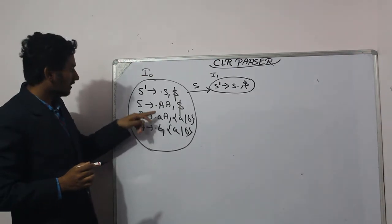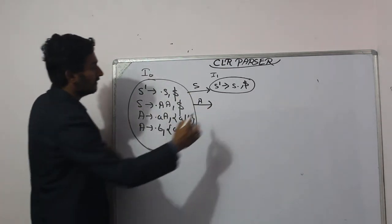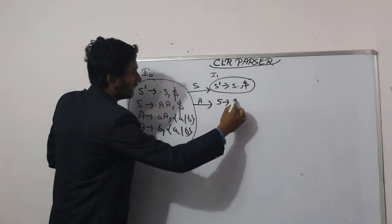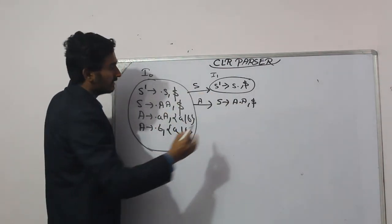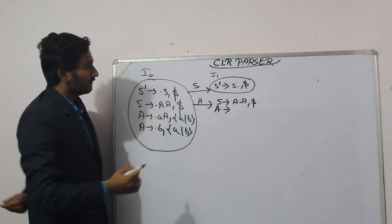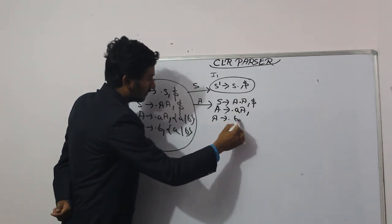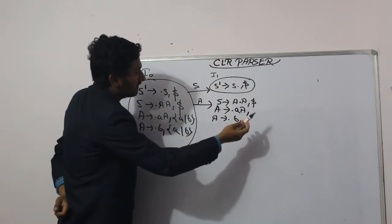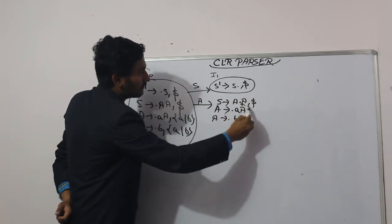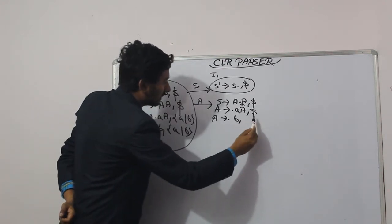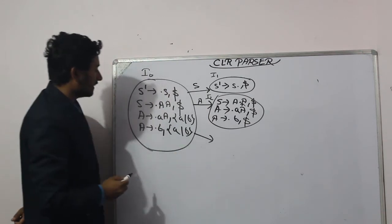From I0, scanning A gives state I2, which contains: S derives A dot A [dollar]. After the dot we have non-terminal A, so we expand it: A derives dot a A [dollar] and A derives dot b [dollar]. The lookahead here is dollar because after this A in S derives A A, only dollar follows.